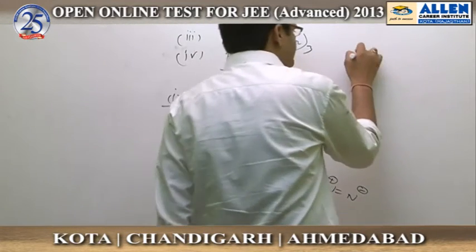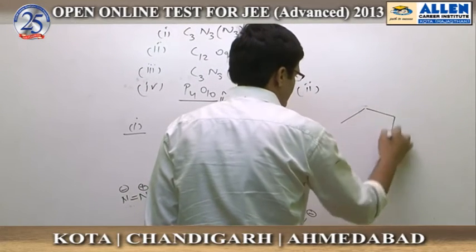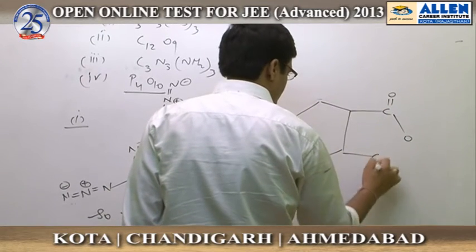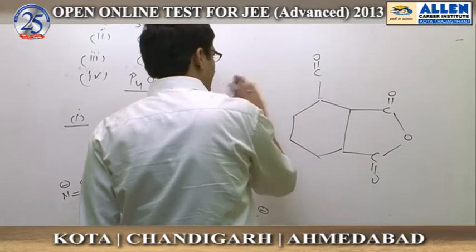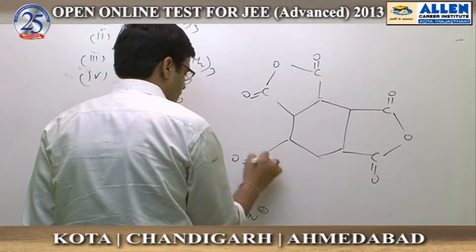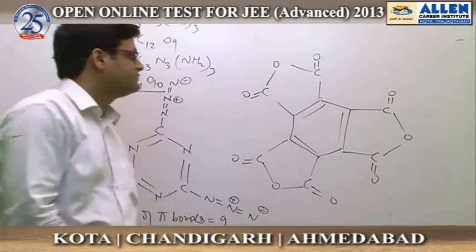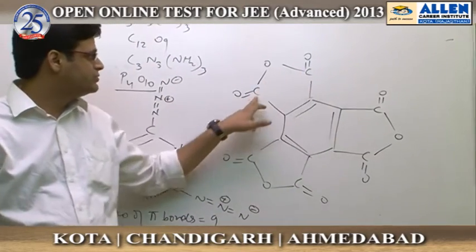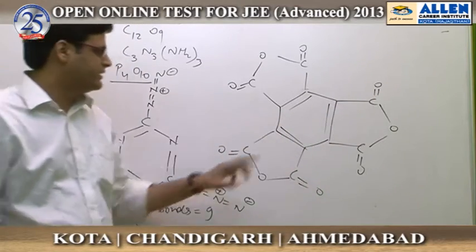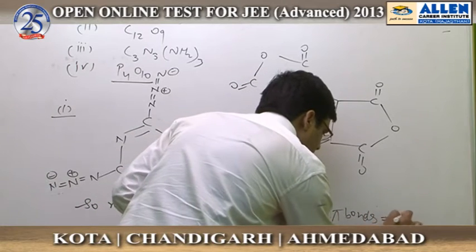Now, for the second option, the number of pi bonds is 3. Third option: the number of pi bonds is 9.